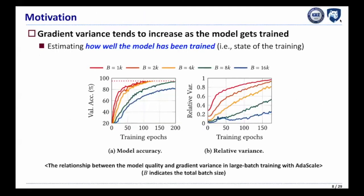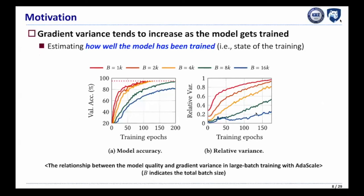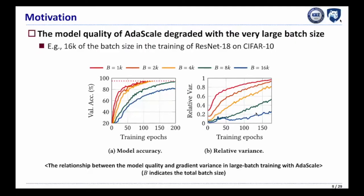Let me explain the motivation of this work. We observed that the gradient variance tends to increase as the model gets trained, meaning the gradient variance estimates how well the model has been trained so far. Despite the success of the gradient variance scaling method, however, we observed that model quality is significantly degraded when training with very large batch sizes.